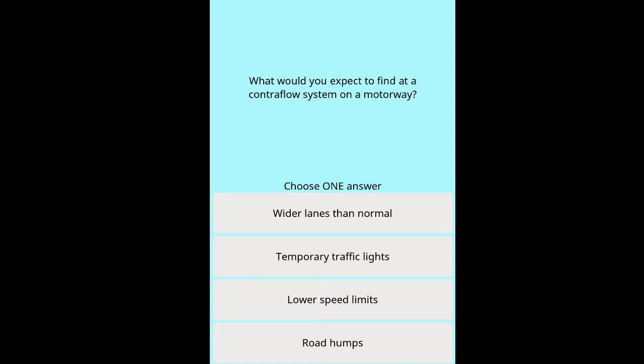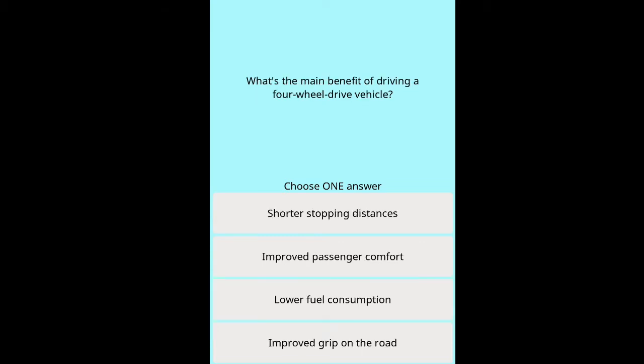Contraflow options: wider lanes than normal, temporary traffic lights, lower speed limits, road humps. Question: What's the main benefit of driving a four-wheel drive vehicle? Options: shorter stopping distances, improved passenger comfort, lower fuel consumption, improved grip on the road.